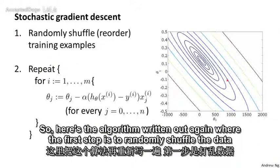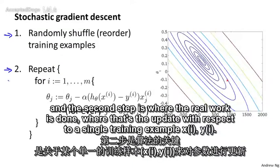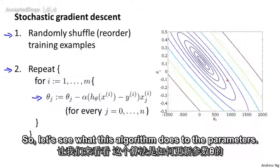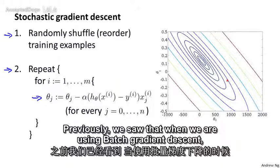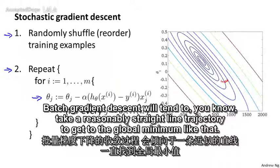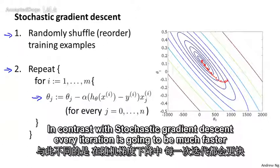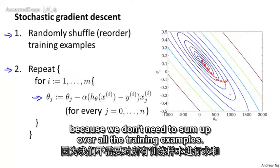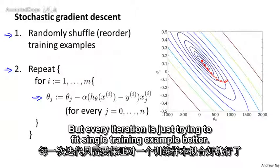Here's the algorithm again: the first step is to randomly shuffle the data, and the second step is the update with respect to a single training example (x_i, y_i). With batch gradient descent, which looks at all training examples at a time, it would take a reasonably straight line trajectory to the global minimum. In contrast, with stochastic gradient descent, every iteration is much faster because we don't need to sum over all the training examples, but every iteration is just trying to fit a single training example better.